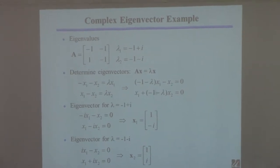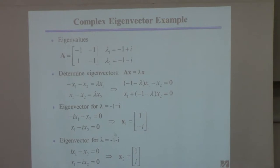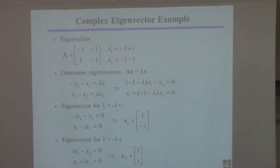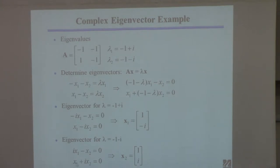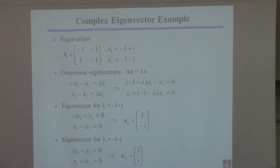So I picked X1 equal 1 and used the second equation, which is easier, to find that X2 had to be minus i. If you do the same procedure using the second eigenvalue and plug it in, you find the equations work out to X2 being i instead of minus i. Two eigenvectors corresponding to two eigenvalues — they're linearly independent, but they're complex. Complex eigenvalues give you complex eigenvectors.